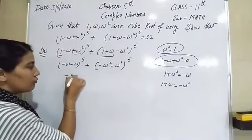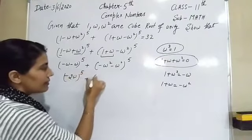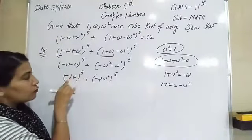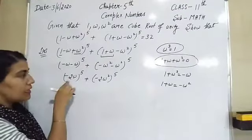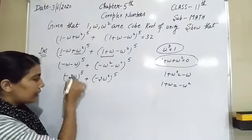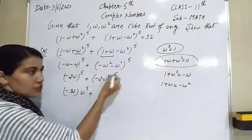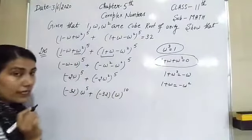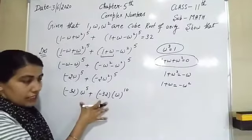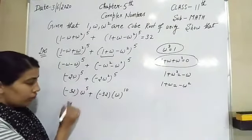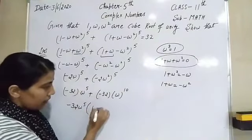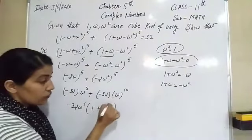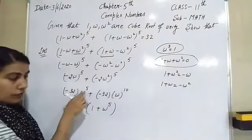So we have (−2ω)⁵ + (−2ω²)⁵. This gives −32ω⁵ + (−32)ω¹⁰, which equals −32ω⁵(1 + ω⁵). Taking −32ω⁵ as a common factor: inside the bracket we have 1 + ω¹⁰ divided by ω⁵, giving 1 + ω⁵.